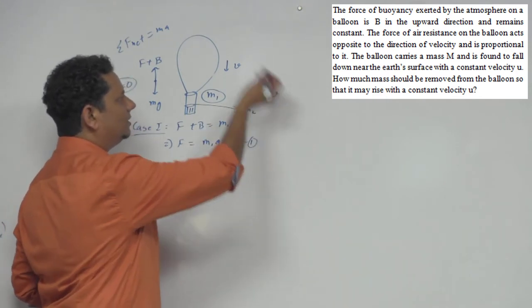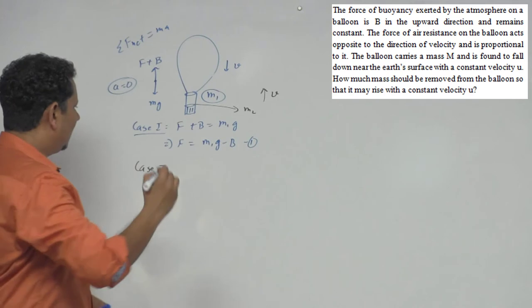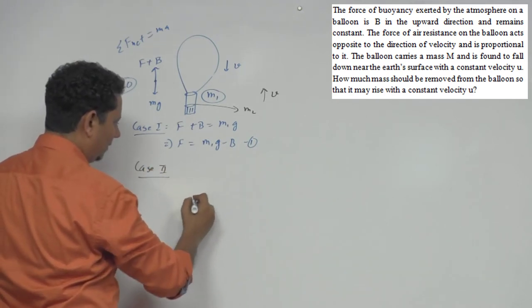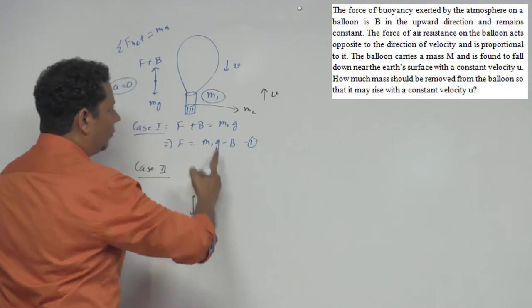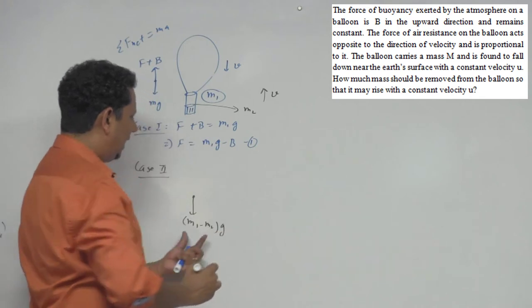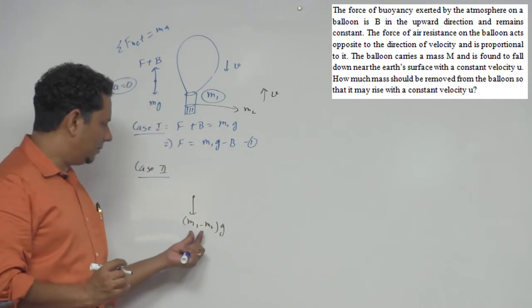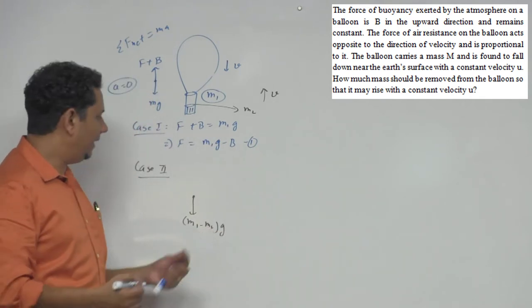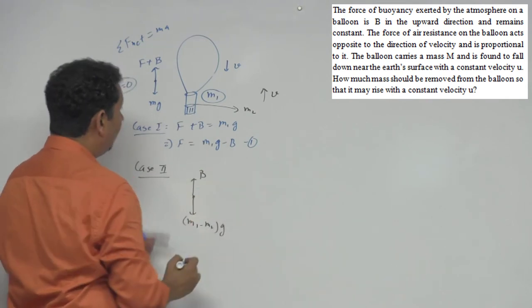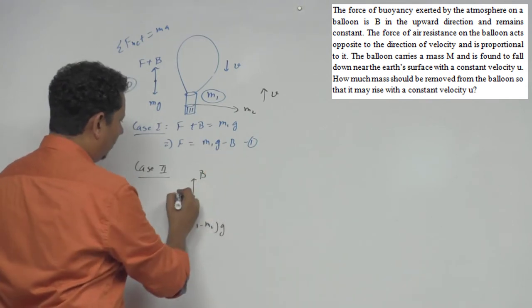If we make the FBD for the balloon rising with velocity V, the downward force is M1 minus M2 times G. Why? Because the net mass remaining is M1 and M2 has been thrown out. And the buoyancy force acts upward. Now since the balloon is going upward with velocity V, the viscous force or air resistance force acts in the downward direction.